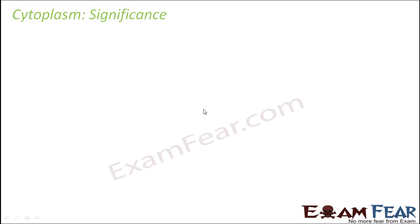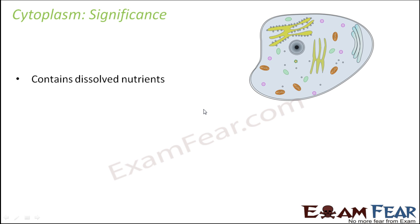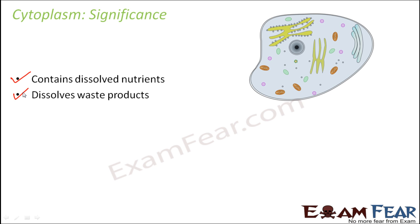Let us look at the significance of cytoplasm. First, it contains dissolved nutrients — whatever nutrients are needed by the cell for its survival are present in dissolved form in the cytoplasm, available to all the cell organelles so they can utilize them. Second, it dissolves waste products — not only does it provide useful substances to cell components, it also takes out all the waste products from the cell in dissolved form.